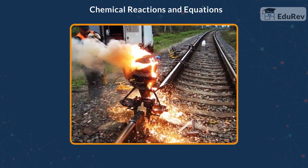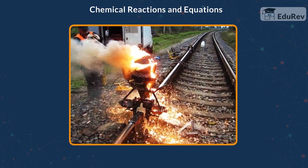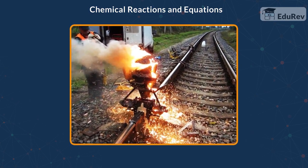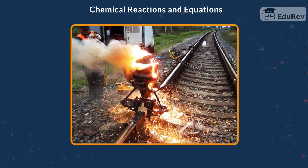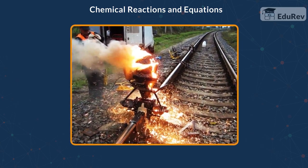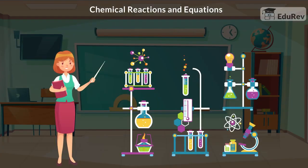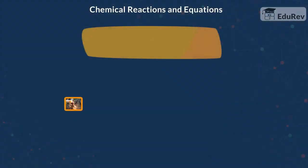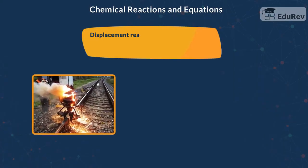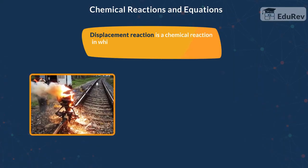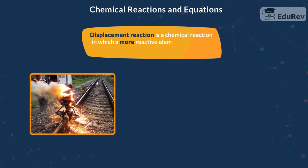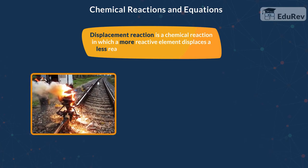Have you ever wondered how we get that molten iron which is used to join cracked railway track together? In this video we will understand what is a displacement reaction. Displacement reaction is a chemical reaction in which a more reactive element displaces a less reactive element from its compound.